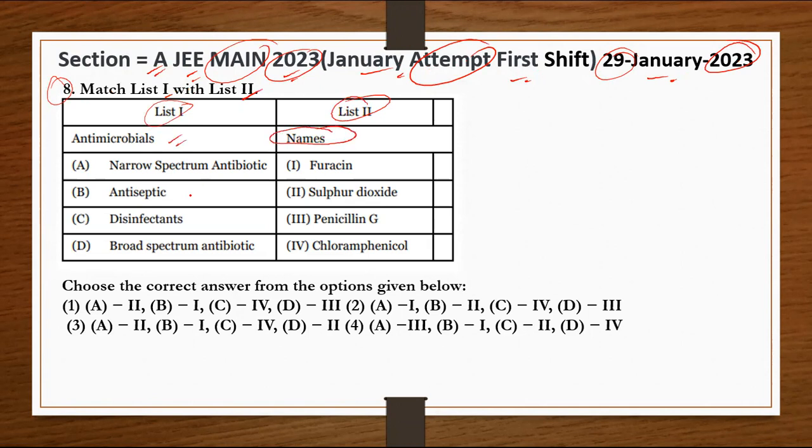First is narrow spectrum antibiotic. What is narrow spectrum antibiotic? That is penicillin. What is penicillin? Penicillin is a narrow spectrum antibiotic.